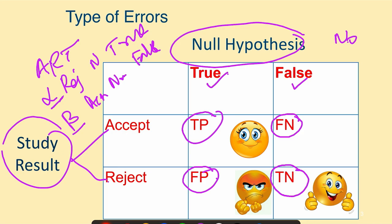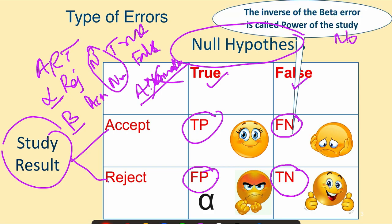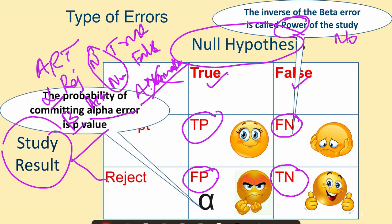We always deal with the null hypothesis and never with the alternate hypothesis in error analysis. The inverse of the beta error is called the power of the study. The probability of committing the alpha error is called the p-value of the study. P-value is nothing but the probability of rejecting the null hypothesis when it is actually true.